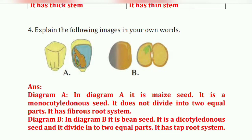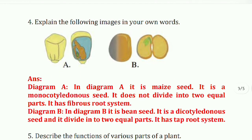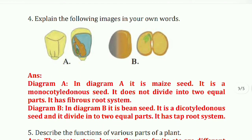Next question: explain the following images in your own words. Diagram A shows a maize seed. It is a monocotyledonous seed, it is not divided into two equal parts, and it has a fibrous root system.